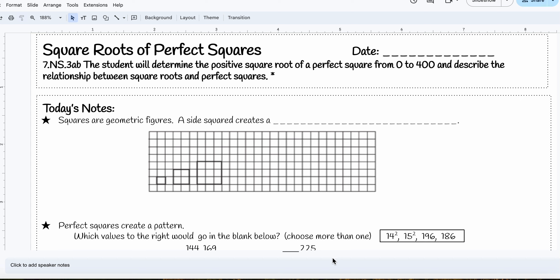My part two video on square roots of perfect squares. So once again, the student will determine the positive square root of a perfect square from 0 to 400 and describe the relationship between square roots and perfect squares.